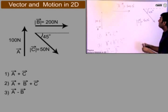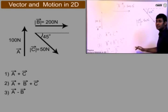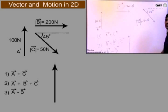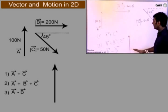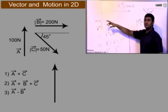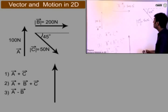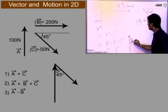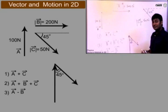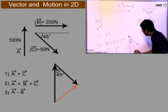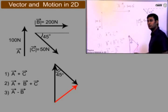Let me demonstrate. For A plus B, I will draw vector A. On the head of vector A, keeping the scaling in mind — say 100 newtons equals 10 centimeters, so 10 newtons per centimeter — I draw a vertical line of 10 centimeters for vector A. Then at 45 degrees I draw vector C, 5 centimeters long. The resultant, the third side of the triangle from beginning to end, will represent A plus C.